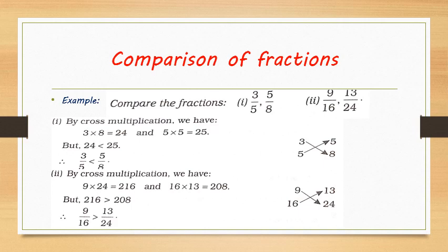Let's take an example using cross multiplication: compare 3 by 5 and 5 by 8. Keeping numerators in place, multiply 3 with 8 to get 24, and multiply 5 with 5 to get 25. Since 24 is smaller than 25, therefore 3 by 5 is smaller than 5 by 8.